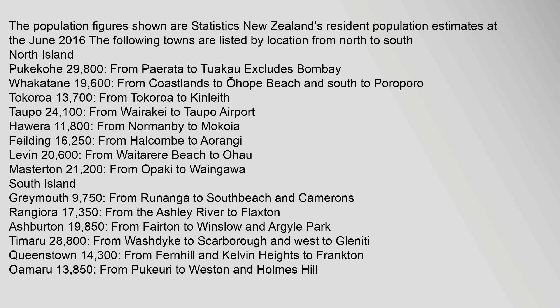Description of secondary urban areas: population figures are Statistics New Zealand's resident population estimates at June 2016. The following towns are listed by location from North to South. North Island: Pukekohe 29,800, from Paerata to Tuakau. Whakatane 19,600, from Coastlands to Ohope Beach and south to Poroporo. Tokoroa 13,700, from Tokoroa to Kinleith. Taupo 24,100, from Wairakei to Taupo Airport. Hawera 11,800, from Normanby to Mokoea. Feilding 16,250. Levin 20,600. Masterton 21,200, from Opaki to Waingawa.